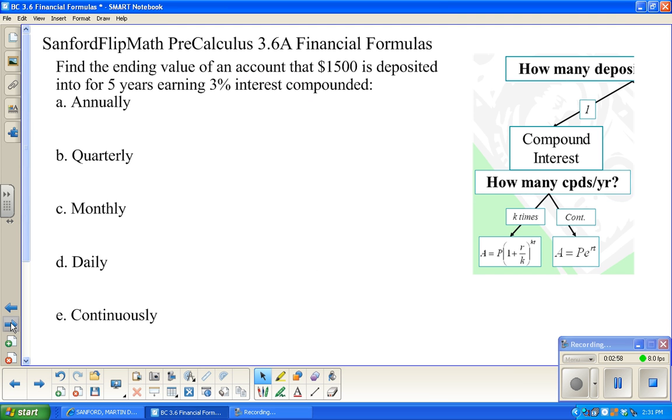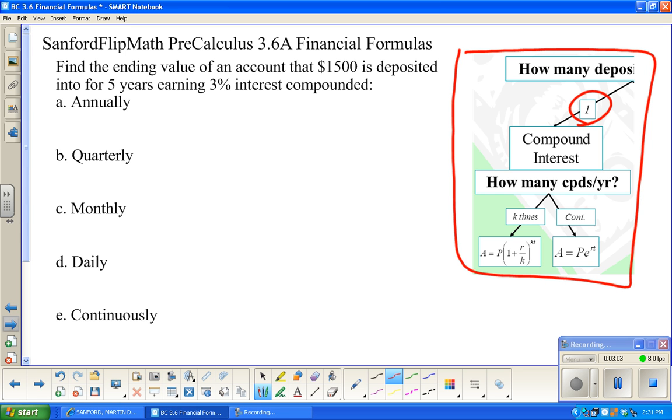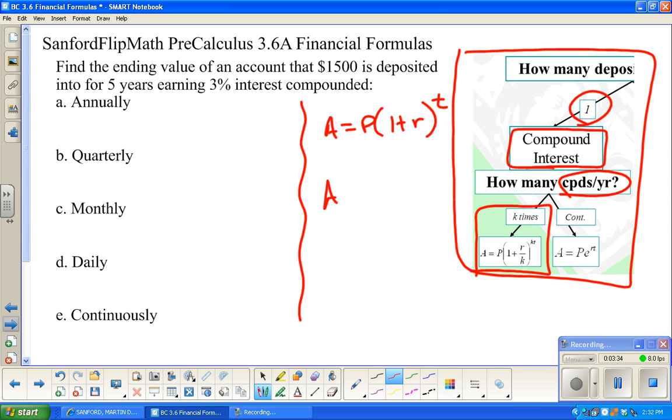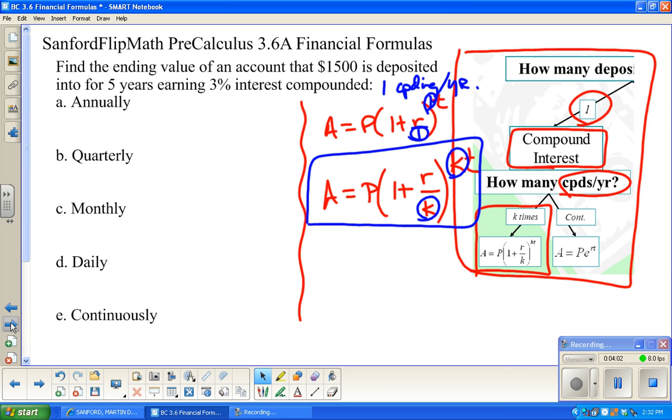The distinction is going to be between that and an annuity, which is either a regular deposit or withdrawal. I'm saving up for a rainy day, so I'm deciding to put away $100 a month for the next three years. Each payment I put in earns interest for a different amount of time. So that makes the formula a little more complicated. We're going to focus in on compound interest, which has one deposit or withdrawal.